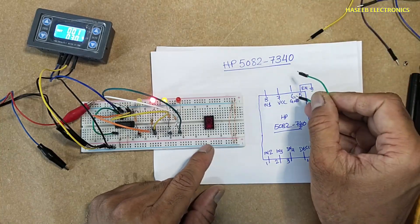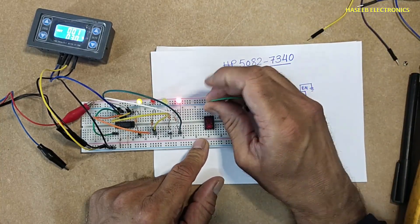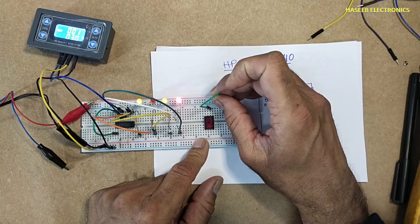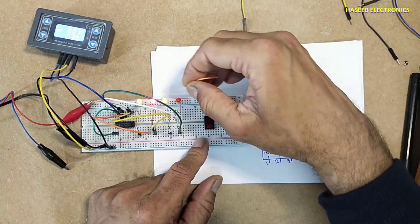First we will connect pin number six to ground. Pin number seven VCC.